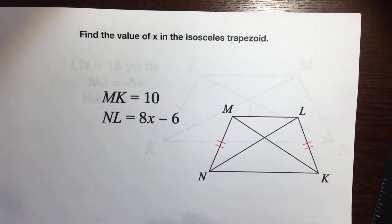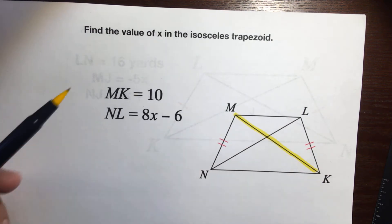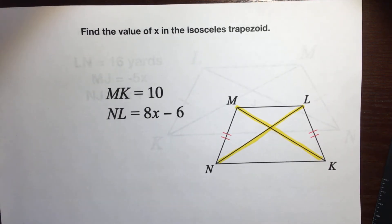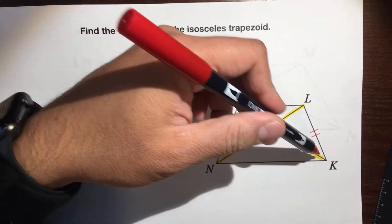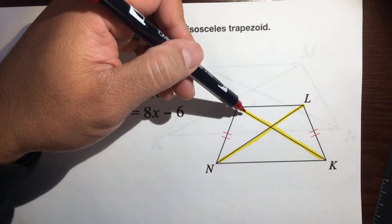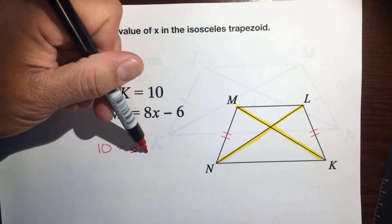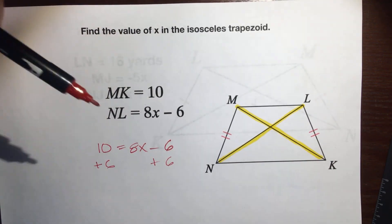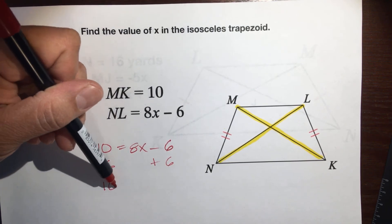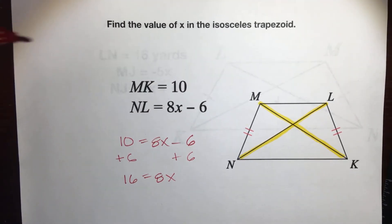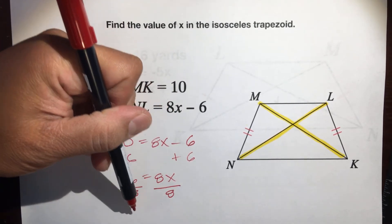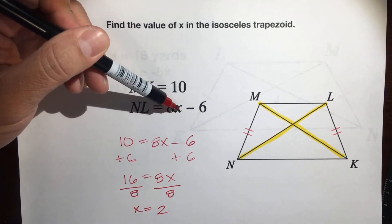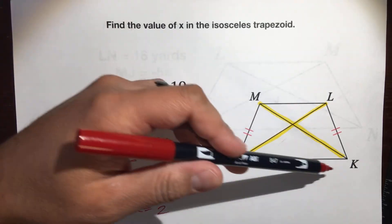Find the value of x in the isosceles trapezoid. MK — this entire diagonal — is 10. NL — this entire diagonal — is 8x minus 6. Diagonals are congruent, so we can set them equal: 10 equals 8x minus 6. Add 6 to both sides: 16 equals 8x. Divide both sides by 8: x equals 2. Plug it in: 8 times 2 is 16, minus 6 is 10. Both diagonals are 10.